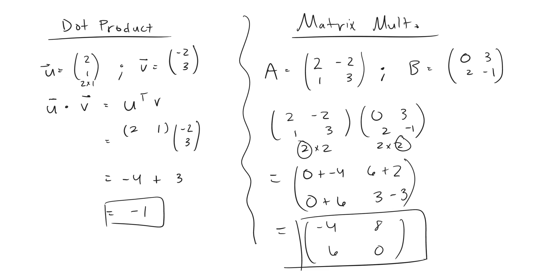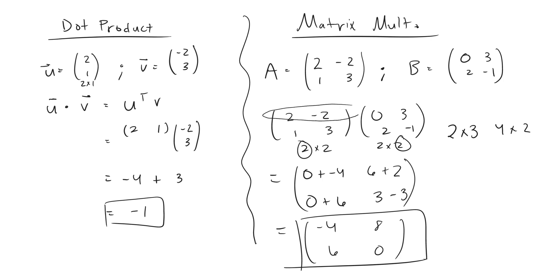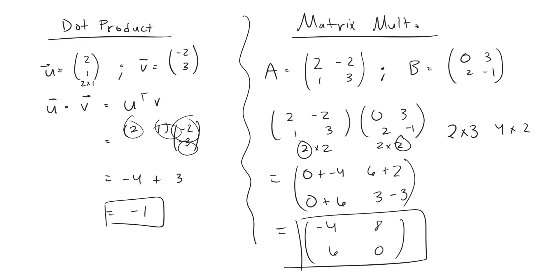The key things to remember: when you multiply two matrices A and B, the resulting matrix C has the same number of rows as A and the same number of columns as B. One critical requirement for matrix multiplication — the inner dimensions must match. If A was 2 by 3 and B was 4 by 2, this would not work, because you'd be taking the dot product of a 3-dimensional row vector with a 4-dimensional column vector, and there would be a mismatch between the number of components. Always make sure your dimensions match up.